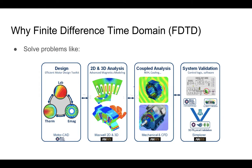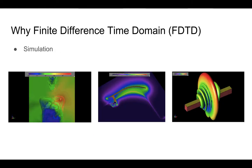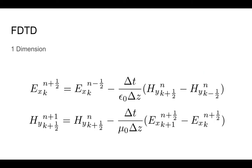For example, approximating the electrical and magnetic field in a specific location using an approximation method. This is another application for the finite difference time domain method — a simulation of the EMAG field — and it uses FDTD.